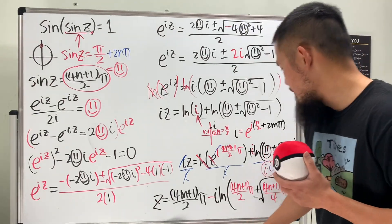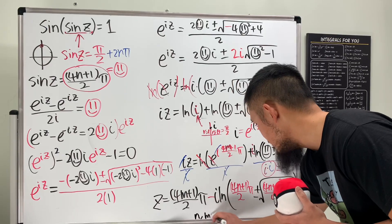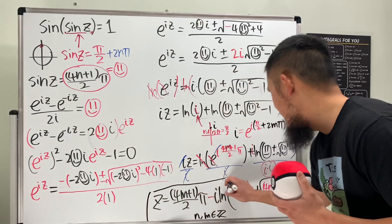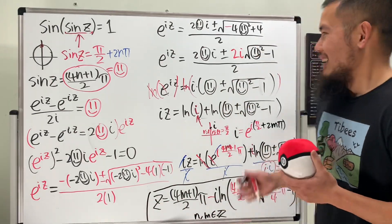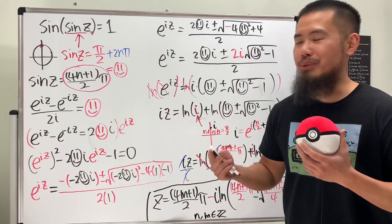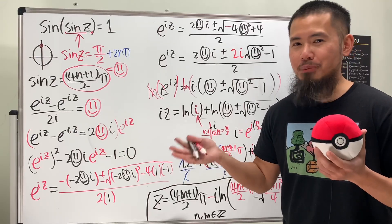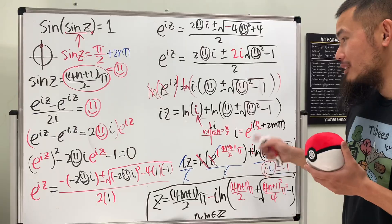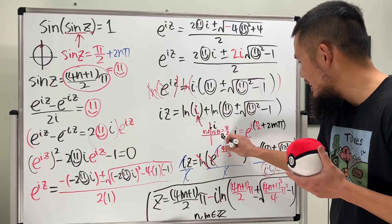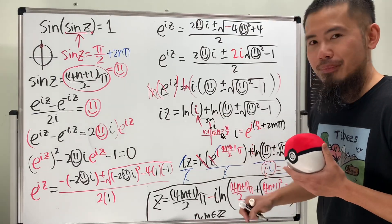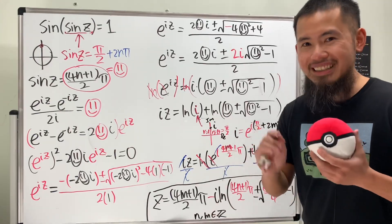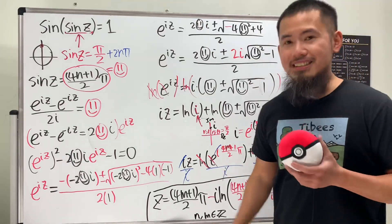So n and m should both be integers — that's the complete solution. This is essentially my special take following the sine-of-z-equals-two video, and thank you so much for one million views on that one. Hopefully this time I'm not making any mistakes. Enjoy!